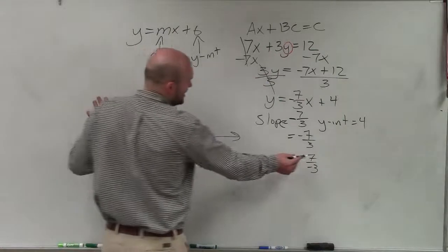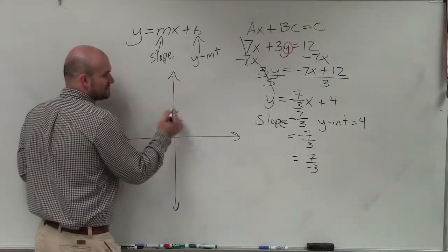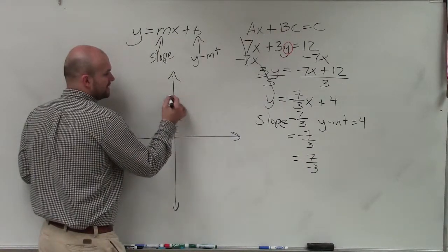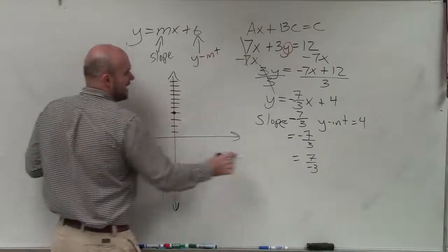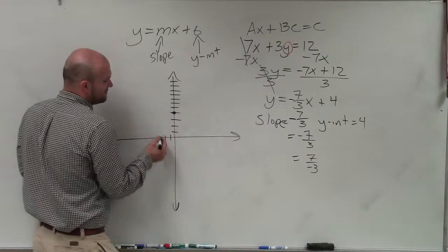So if I use the change as positive 7 over negative 3, the change in my y-values is positive 7. So that means I'm going to go positive 7 units: 1, 2, 3, 4, 5, 6, 7. And then the change in the x-values is negative 3. So I go up 7 and then to the left 3.